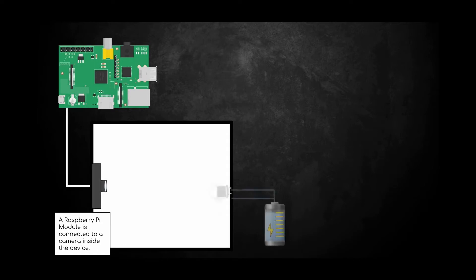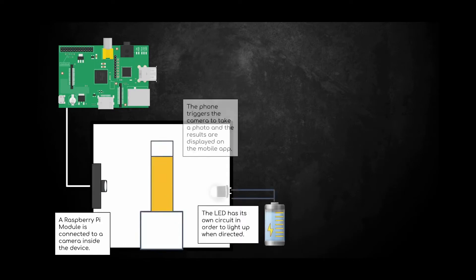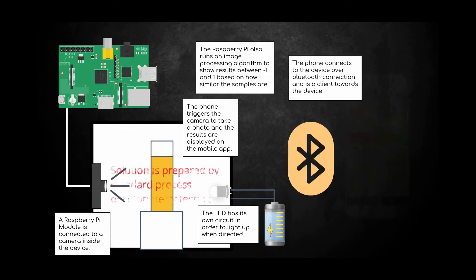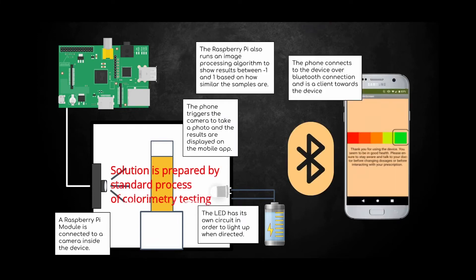The device consists of a Raspberry Pi computer with image processing algorithms, a controlled testing environment including a mini camera connected to the Raspberry Pi, and an LED with consistent lighting, all housed within an opaque container.